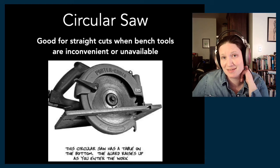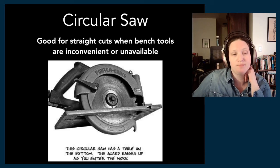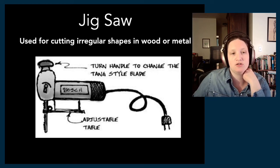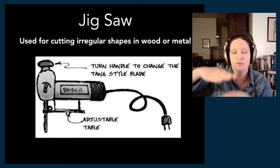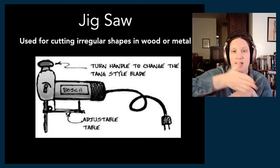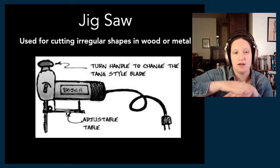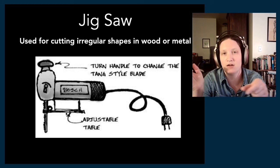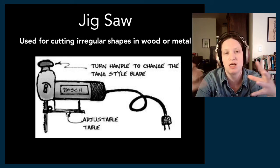You'll also come into a jigsaw a lot. It has a handle that helps you stabilize and hold it, a jigsaw blade, and an adjustable table that rests against the material you're cutting. It allows you to change the angle of the blade as you cut. It also has a smaller, narrower blade, so a jigsaw can do things like cut along curves and cut irregular shapes.